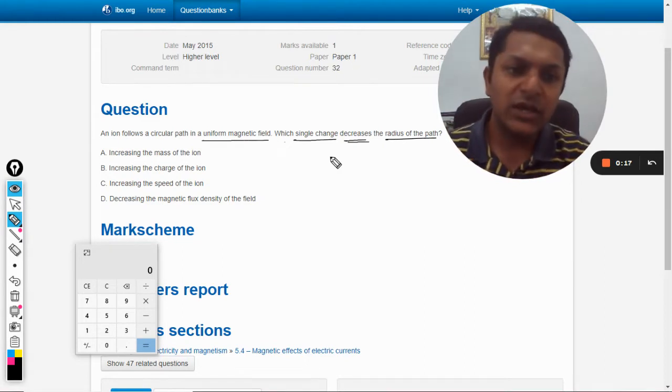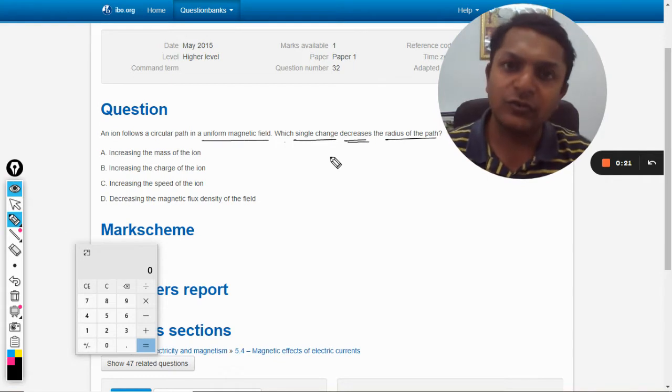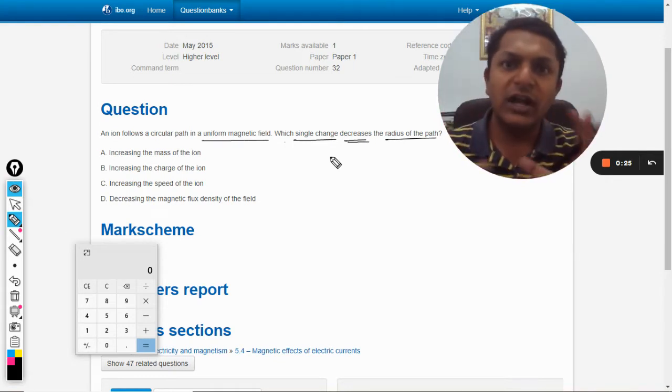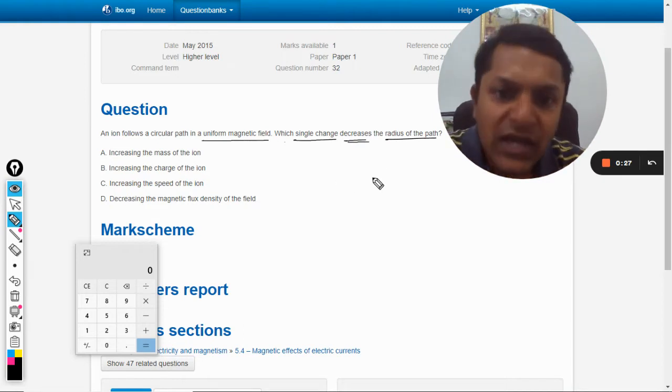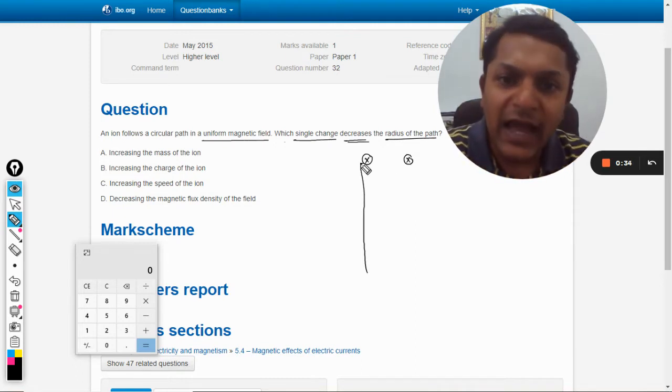I don't know whether this topic is covered in your classrooms or books, so I'm giving you a little glimpse of that topic. Let us say there is this region having a magnetic field which is into the board, and the region towards left does not have any magnetic field.